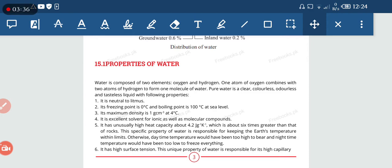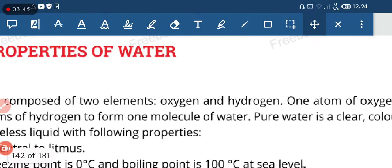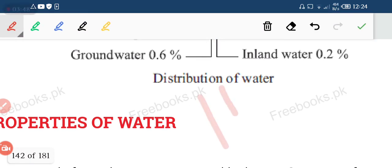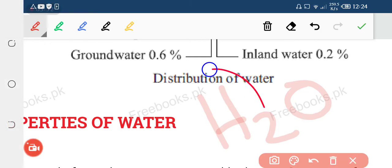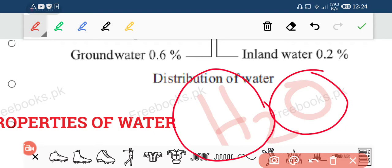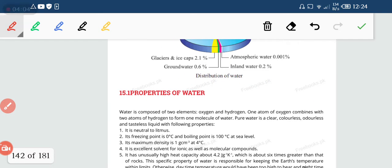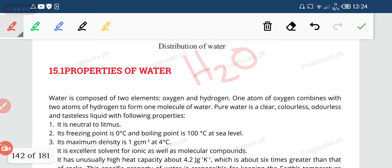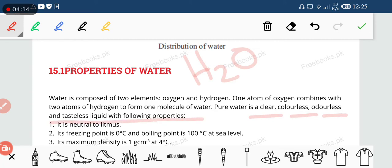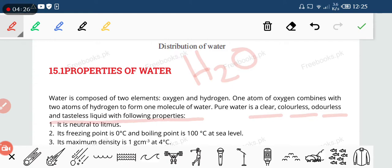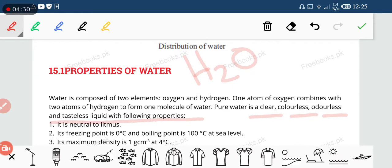Water is composed of two elements, oxygen and hydrogen. One atom of oxygen combined with two atoms of hydrogen to form one molecule of water. You people are already familiar. Water is pure water. Pure water is clear, colorless, odorless, and tasteless liquid. Pure water has no smell. It is neutral to litmus.